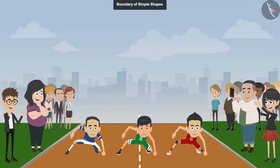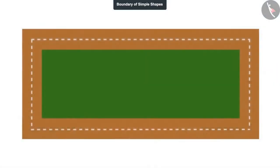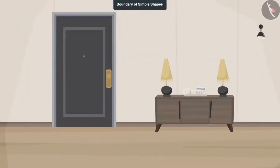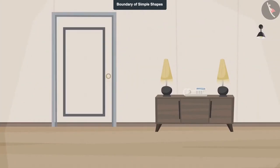In the race track, it is necessary to measure the boundary of the track when there is a race of vehicles or people. A special kind of wooden frame is also put around the door. For that, it is necessary to measure the boundary.